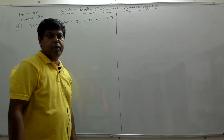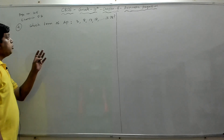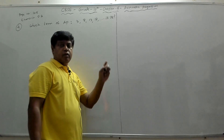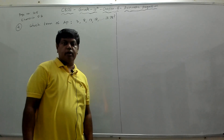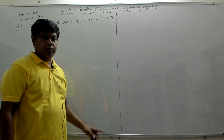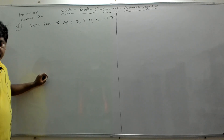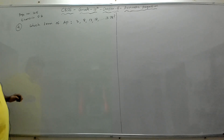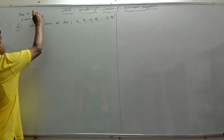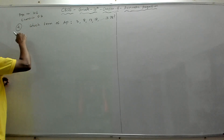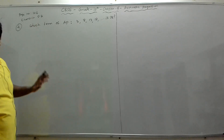Hi everyone, welcome to MyMax Academy. In this video, we will continue with Chapter 5 Arithmetic Progression, which is your Chapter 5 from Class 10 CBSE Mathematics. I will continue with Exercise 5.2, page number 106, problem number 4.